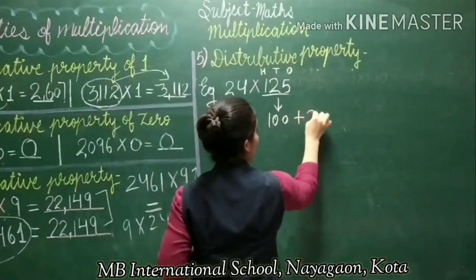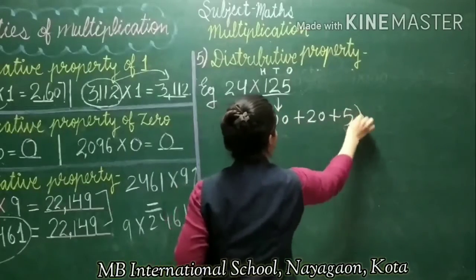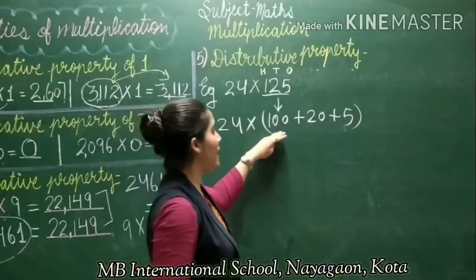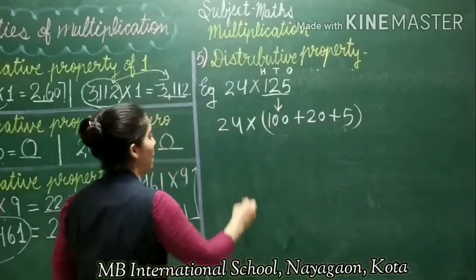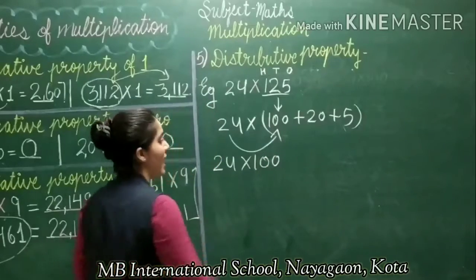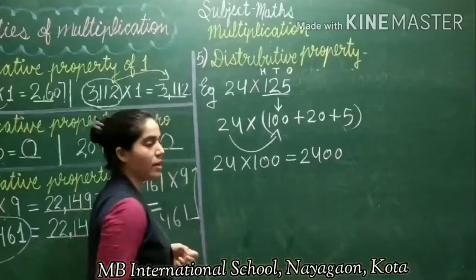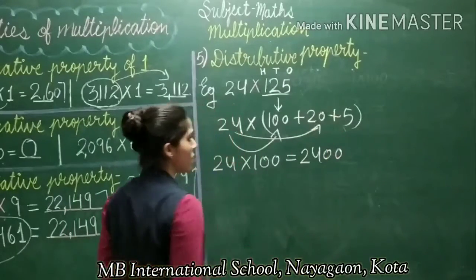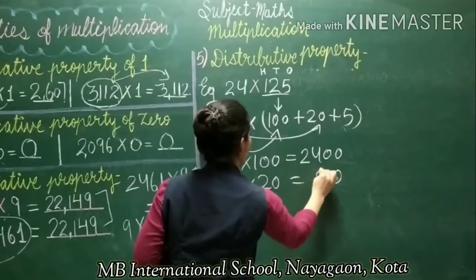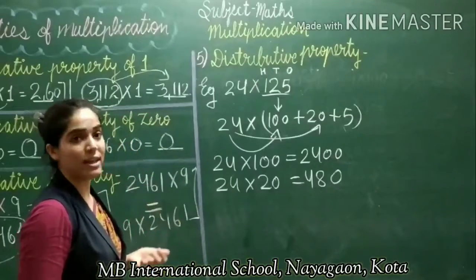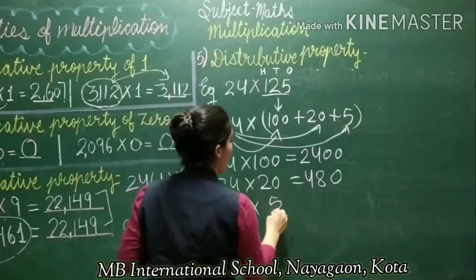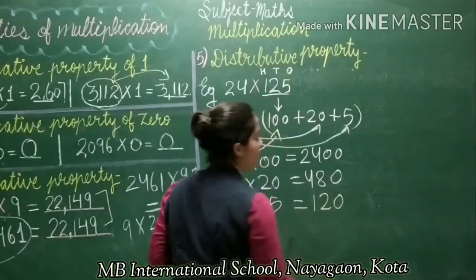After breaking the number into expanded form, we have to multiply 24 by 100, then by 20, then by 5. First, multiply 24 by 100 and we get the product 2,400. Then multiply 24 by 20 and we get the answer 480. The last one is we multiply 24 by 5 and we get the product 120.